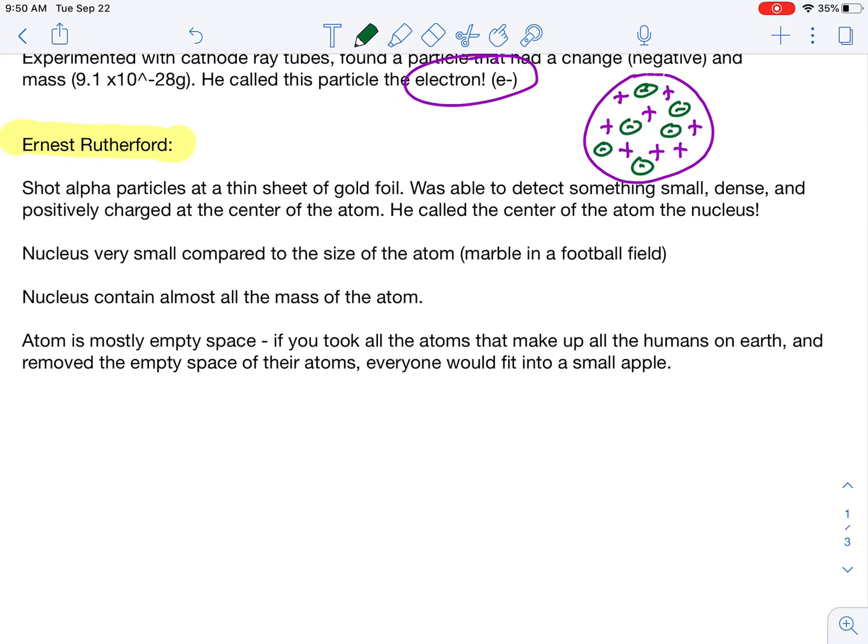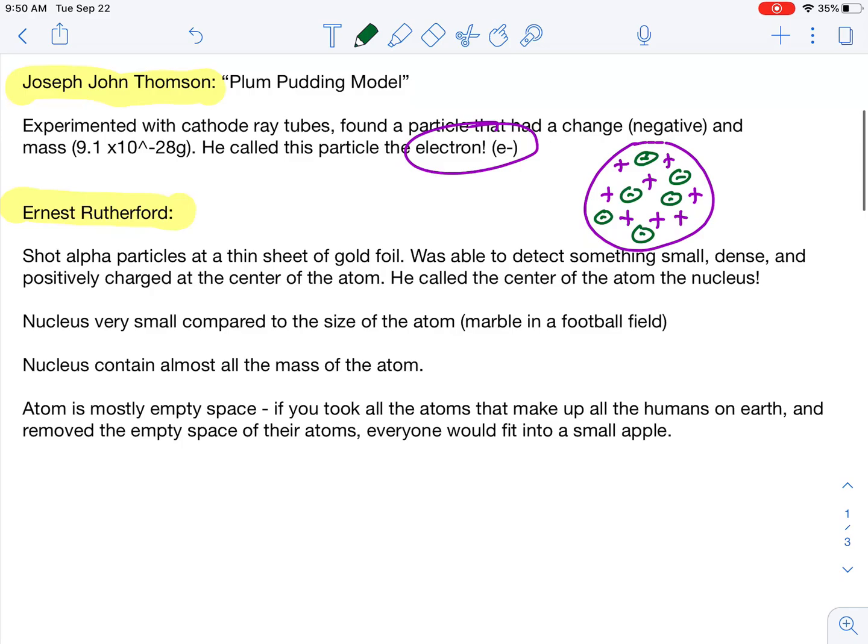Our next scientist, Ernest Rutherford, he shot alpha particles. An alpha particle has two positives and two neutral things. Two neutrons and two protons. That's an alpha particle.